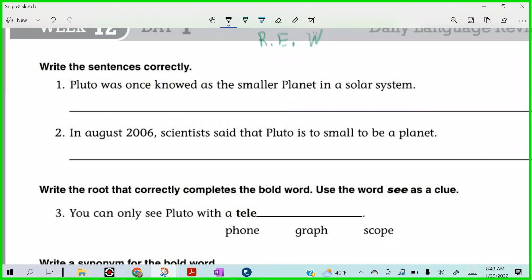Alright, so now let's take a look at this. Pluto was once known as the smaller planet in a solar system. Alright, what's the first thing that jumps out at you? Yeah, Coville, what's up? Node should not be node. What should it be? Can you spell it for me? K-N-O-W-N, right?